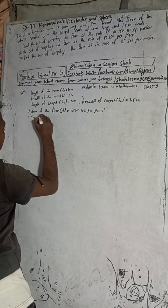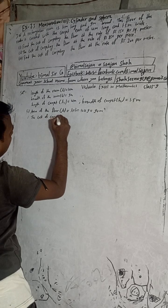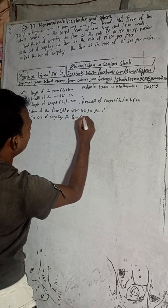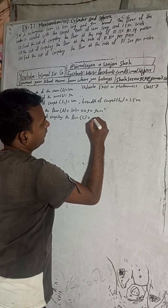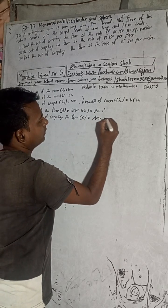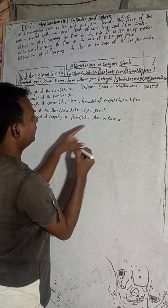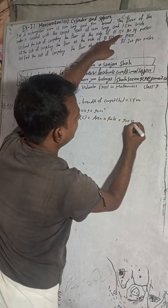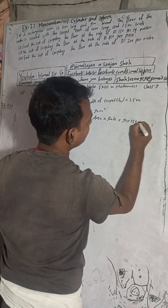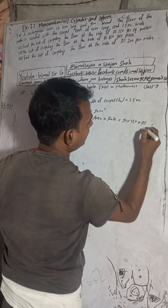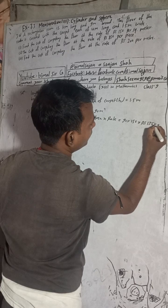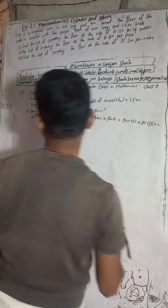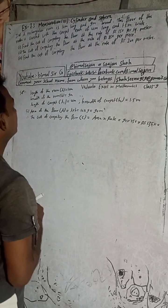Area of the floor is 90 square meters. Therefore, the cost of carpeting the floor equals area of the floor multiplied by the rate. Area is 90 and the rate for carpeting is RS 150 per square meter, so 90 times 150 equals RS 13,500. The cost of carpeting the floor is RS 13,500.